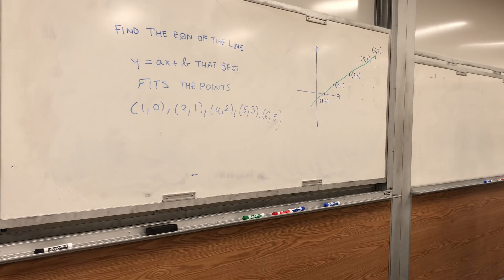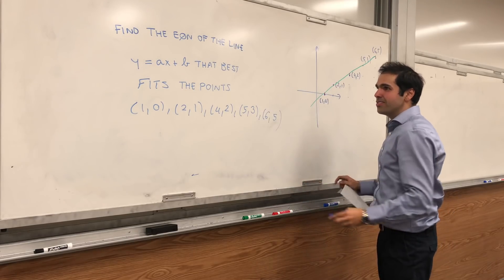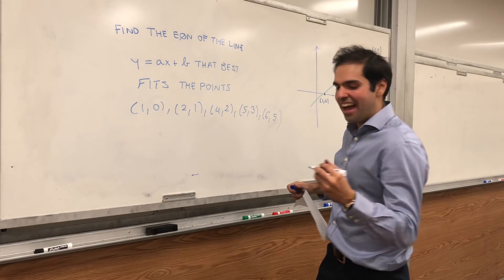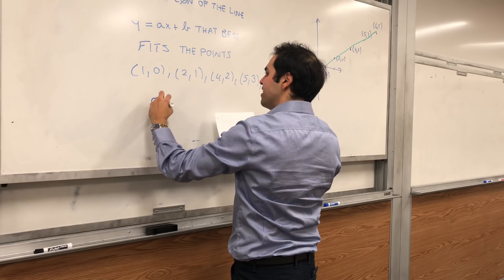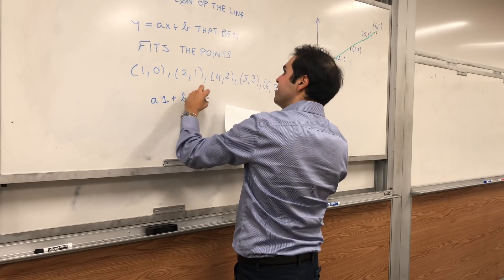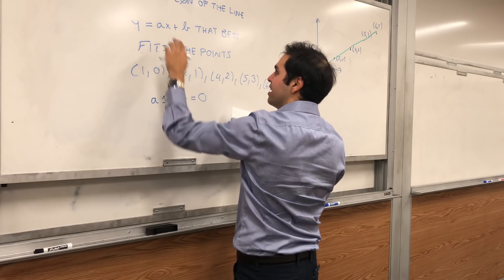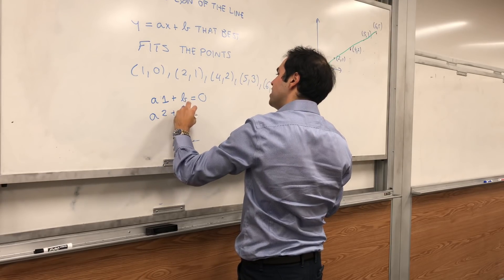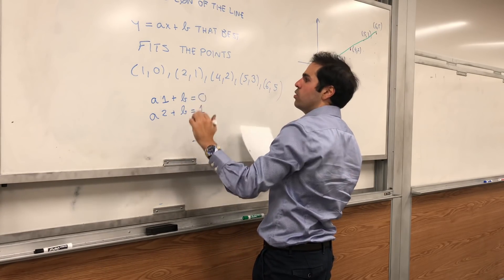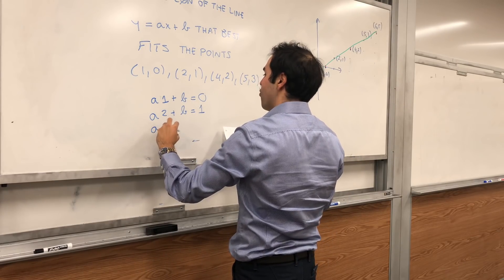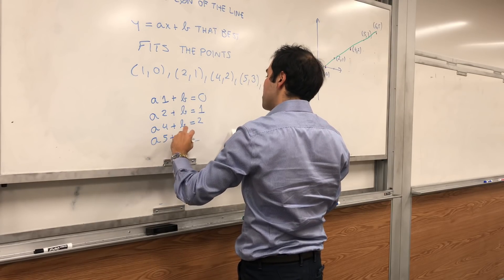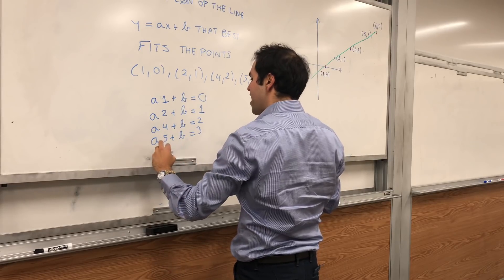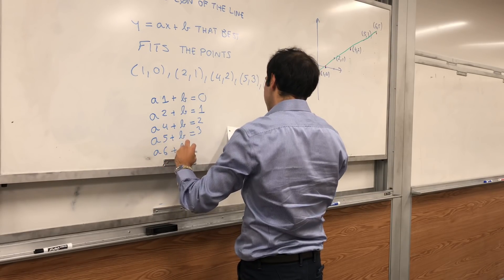So let's do this, it's just a little bit of linear algebra. Suppose that this line fits the points exactly. Then (1,0) would go through this line, so A times 1 plus B would be 0. Similarly, A times 2 plus B would be 1, A times 4 plus B would be 2, A times 5 plus B would be 3, and A times 6 plus B would be 5.